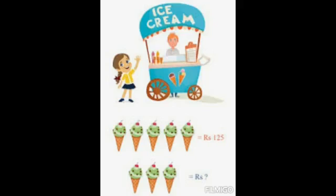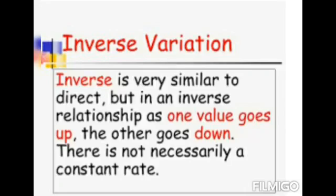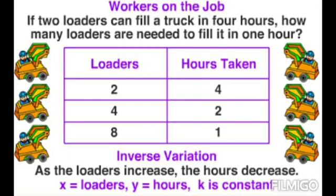Here you can see: the cost of 5 ice creams is Rs. 125. Then what will be the cost of 3 ice creams? It will be less. So for a lesser quantity of ice creams the amount will be less — this is an example of direct variation. The next topic is inverse variation. In an inverse relationship, as one value goes up the other goes down. For example, if two loaders fill a truck in 4 hours, then if we increase the number of loaders, the time taken will reduce. So this is an example of inverse variation.